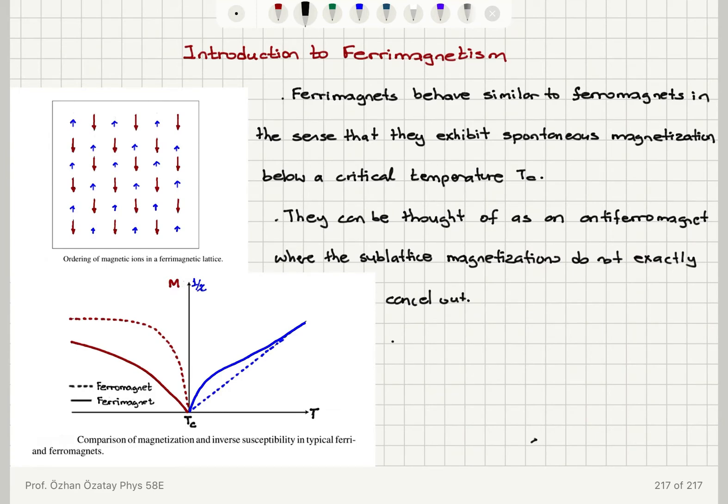And they have magnetization as a function of temperature and 1 over susceptibility as a function of temperature behaviors slightly different compared to ferromagnets.